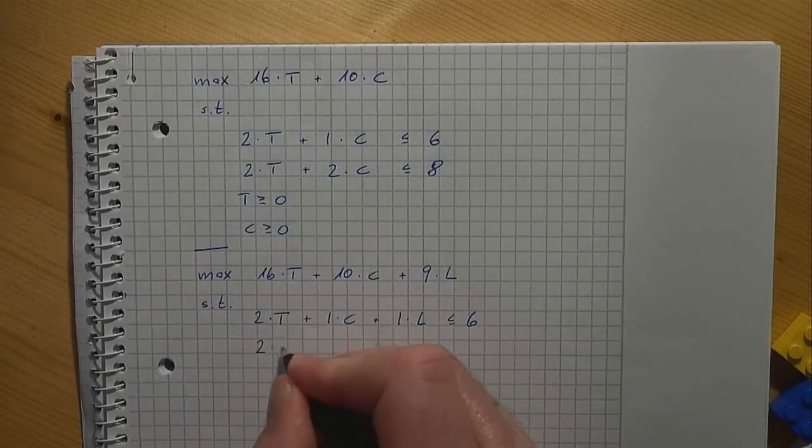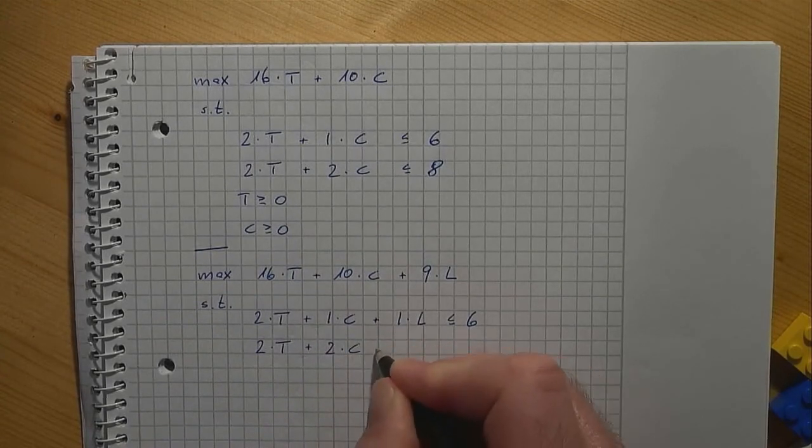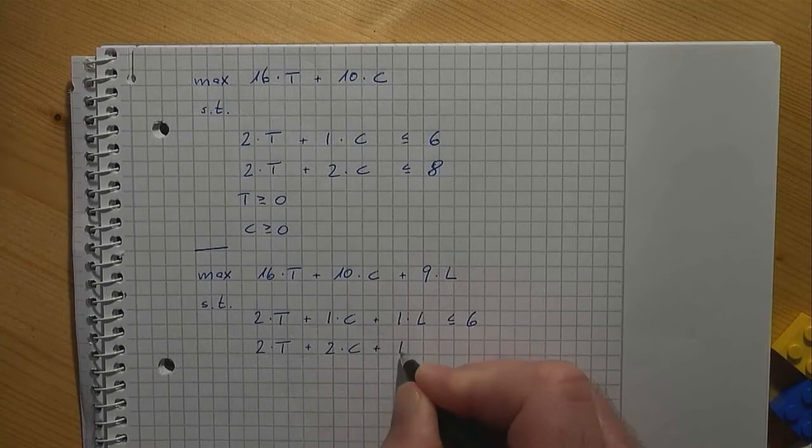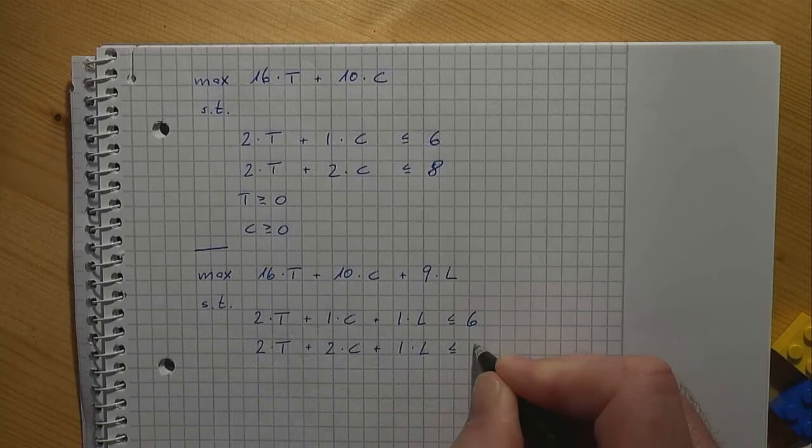2 times T plus 2 times C plus 1 times L is less than or equal to 8.